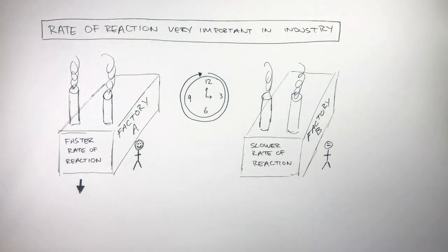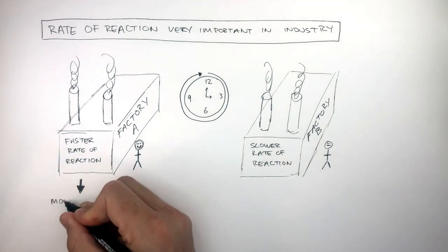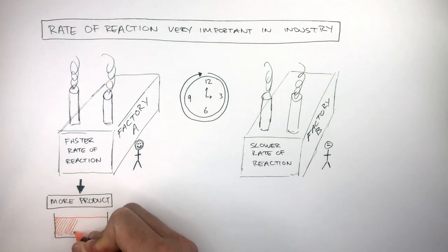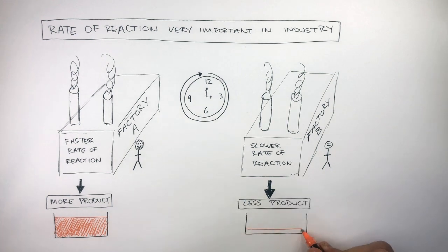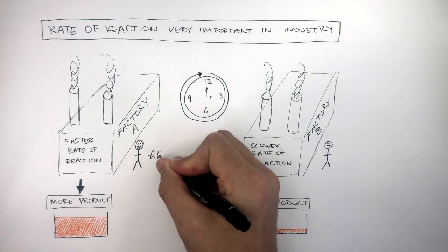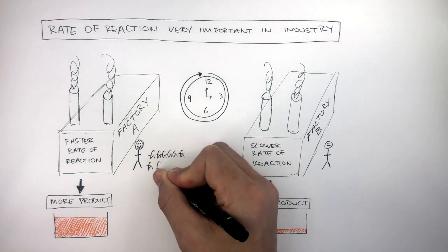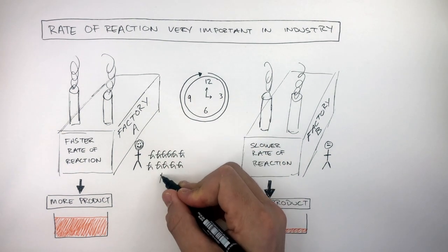factory A are able to produce more product because they have a faster rate of reaction. Whereas, in the same amount of time, factory B produce less product as they have a slower rate of reaction. This means factory A have more product to sell, so have more profits.